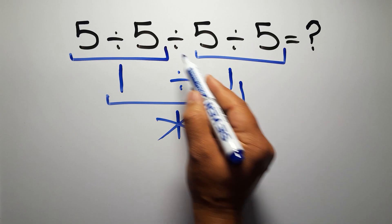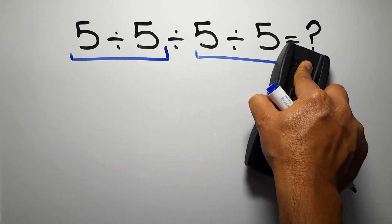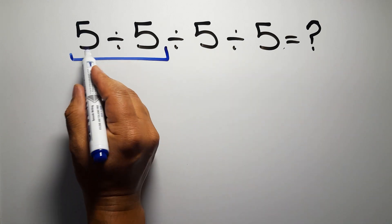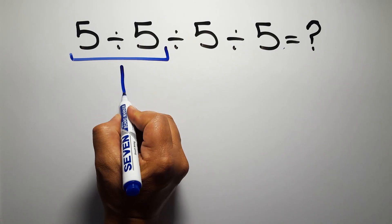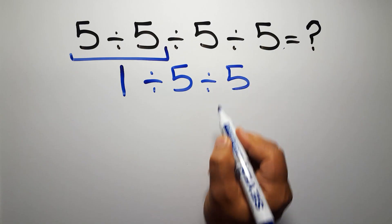If we do this division before this division, it is wrong. So first this division: 5 divided by 5 gives us 1, so 1 divided by 5, and again divided by 5.